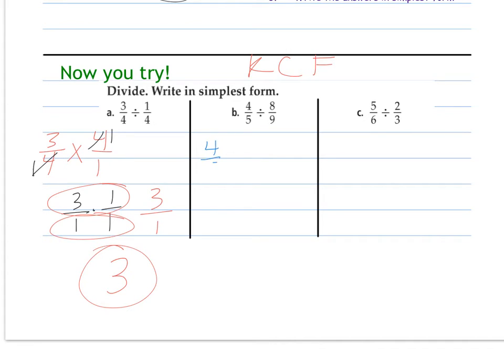Here I have four over five. Keep. Change. And flip. Cross cancel where you can. Four goes in here once. Four goes in here twice. Multiply across. One and nine is nine. Five and two is ten. That is simplified. Greatest common factor of numerator and denominator is one.